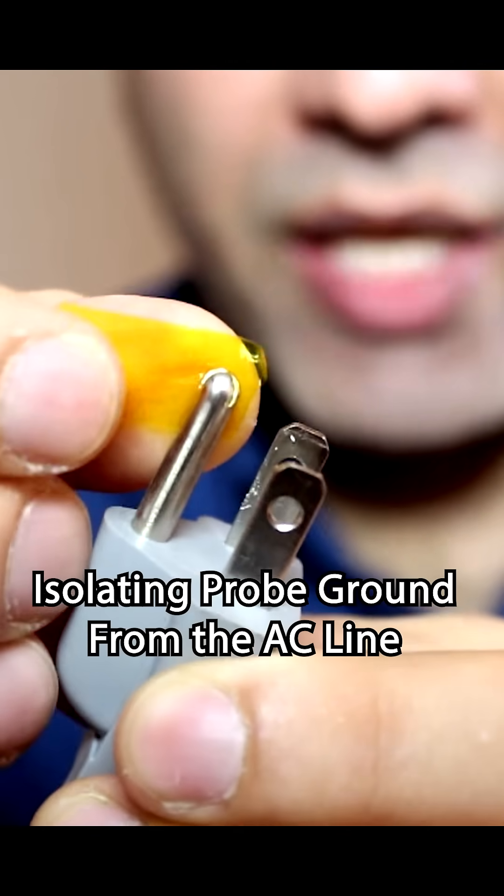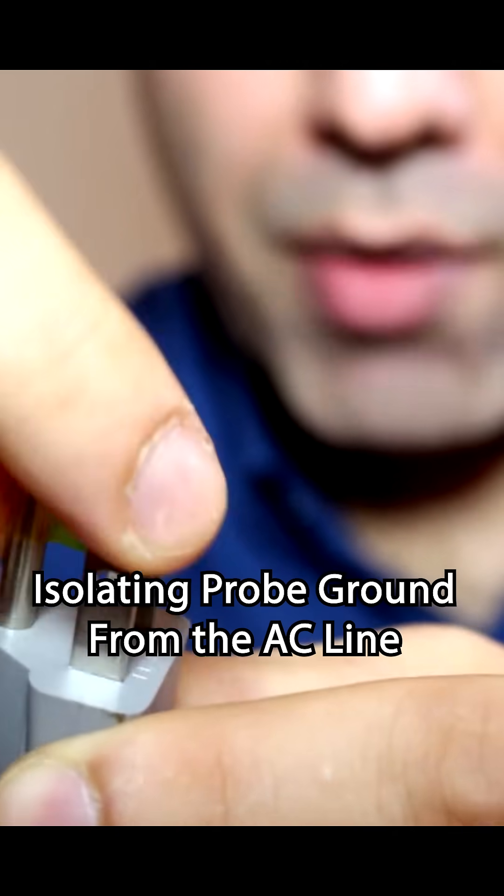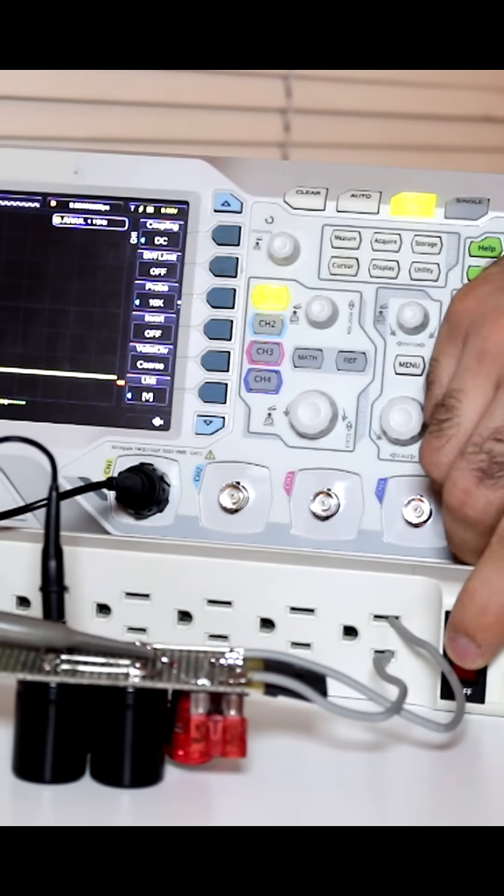Now I'm using this tape called Kapton tape to insulate the earth of the power cord. I turned the power bar on. We are safe now.